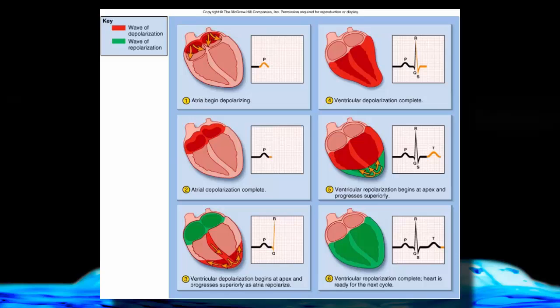In box one, we'll have the SA node firing, initiating depolarization of the atria. The atrial depolarization will show up on the ECG as the P wave.